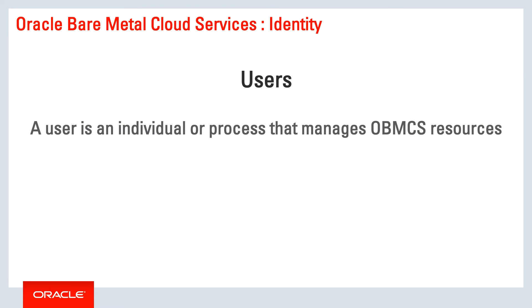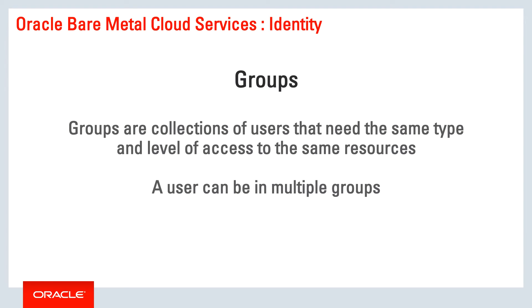A user is an individual or process that manages Oracle Bare Metal Cloud resources. Groups are collections of users that need the same type and level of access to the same resources. A user can be in multiple groups.